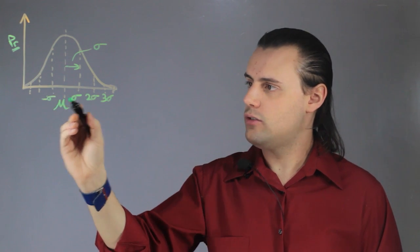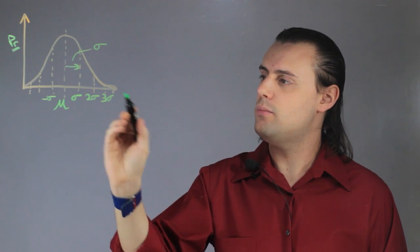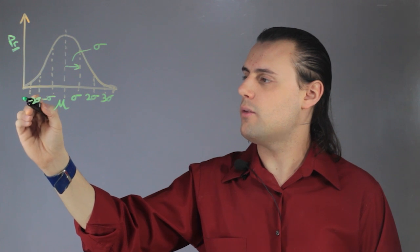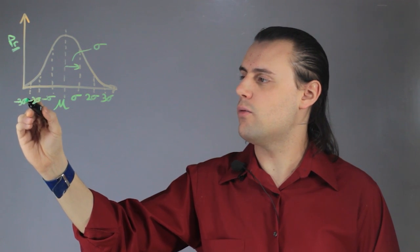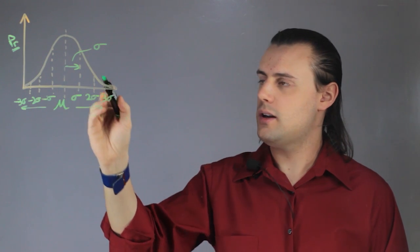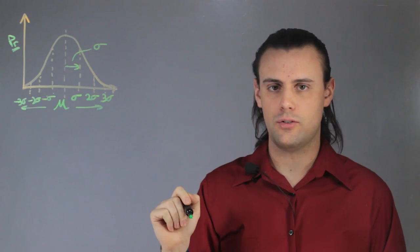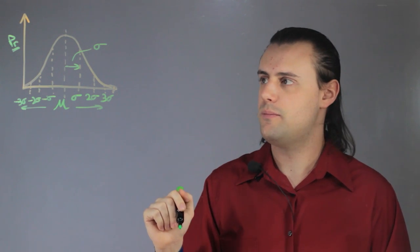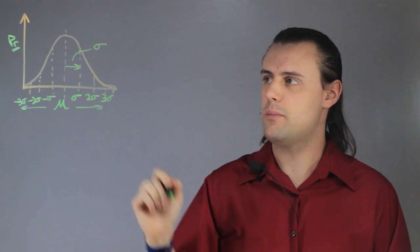So, to the right I would have positive sigma, positive 2, positive 3, so on and so forth. And then I would have sigma going away in the other direction. Here I'm assuming a symmetric distribution, but a distribution naturally doesn't have to be symmetric. If it was asymmetric, it wouldn't be Gaussian.